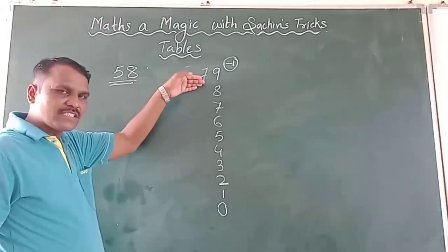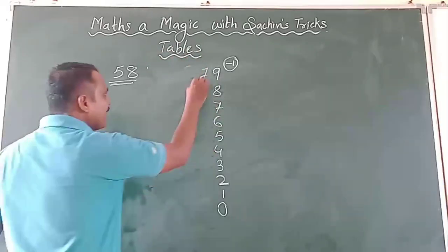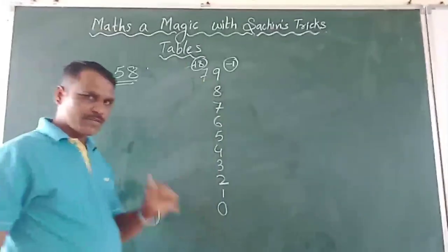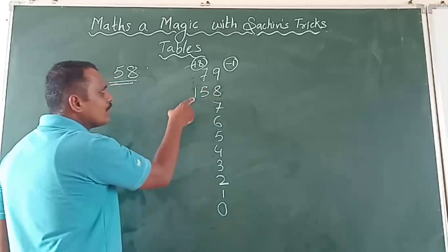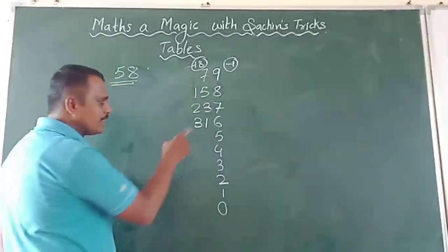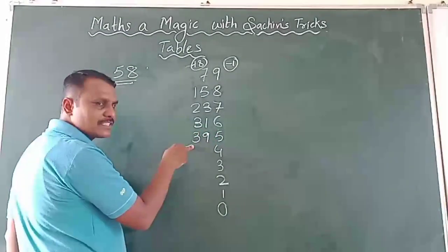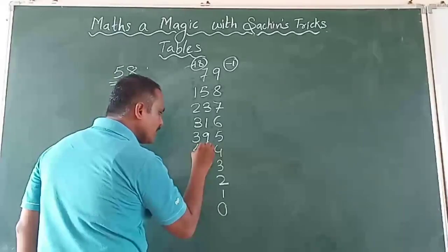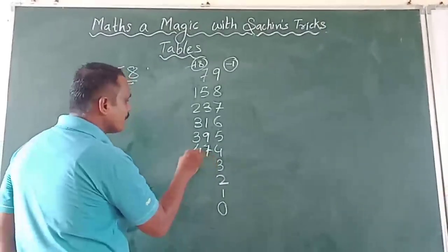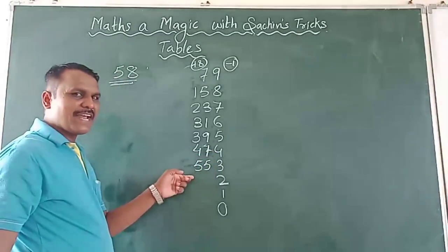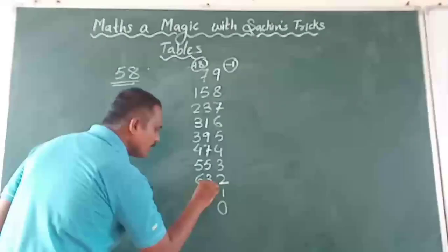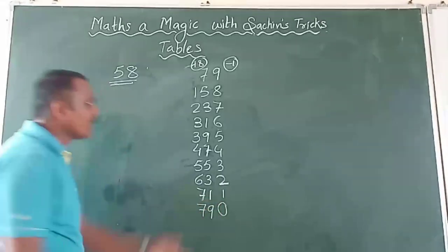Now for the tens place — the successor of 7 is 8, so I will add 8 each time. At the unit place we do subtraction; at the tens place we do addition. So: 7 plus 8 is 15, 15 plus 8 is 23, 23 plus 8 is 31, 31 plus 8 is 39, 39 plus 8 is 47, 47 plus 8 is 55, 55 plus 8 is 63, 63 plus 8 is 71, 71 plus 8 is 79. Table of 79 is ready.